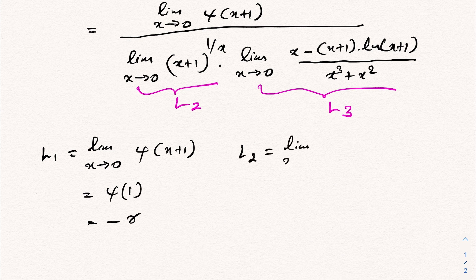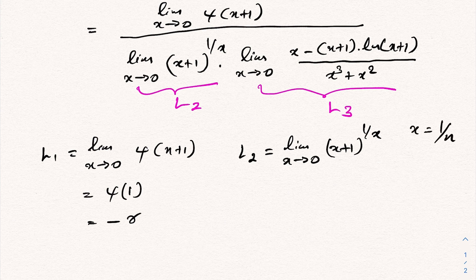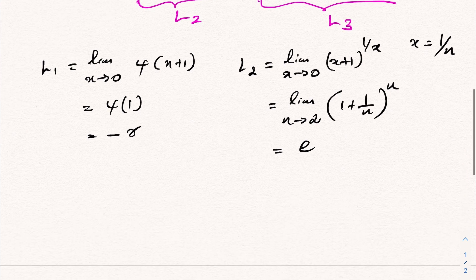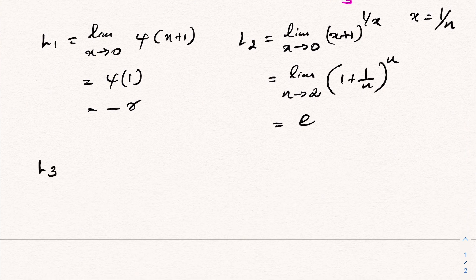L2 is the limit as x approaches 0 of (x plus 1) raised to the 1 over x. Using the substitution x equals 1 over n, the limit becomes n approaches infinity of (1 plus 1 over n) to the n, which by the limit definition of e equals e.